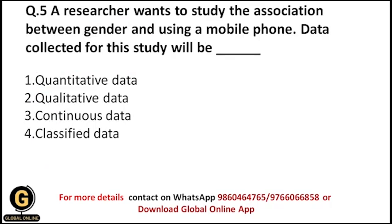Next question: a researcher wants to study the association between gender and using a mobile phone. What type of data will be collected? The researcher wants to understand exactly what is the association between gender and mobile phone use — for example, how many female candidates are using a mobile phone and how many male candidates are using a mobile phone. The question is whether the researcher will collect quantitative data, qualitative data, continuous data, or classified data.